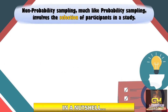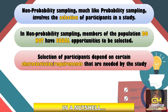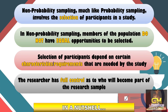In a nutshell, non-probability sampling, much like probability sampling, involves the selection of participants in a study. In non-probability sampling, the members of the population do not have equal opportunities to be selected. The selection of participants depends on certain characteristics and requirements needed by the study. Also, in non-probability sampling, the researcher has full control as to who will become part of the research sample.